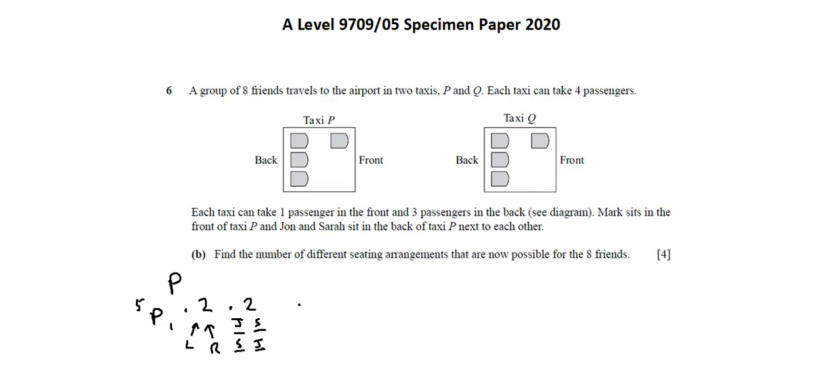Then, I'm going to multiply by what's happening in taxi Q. In taxi Q, we have four seats available for four remaining people, which is 4P4. And when we multiply out 5P1 times two times two times 4P4, we have 480 different seating arrangements. This completes the requirements for 9709 Specimen Paper 5, Question 6.